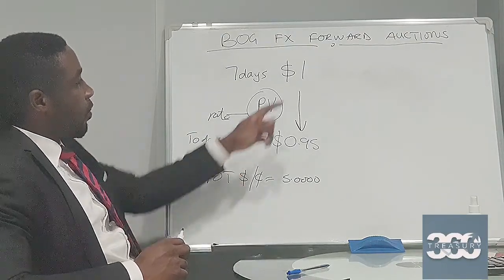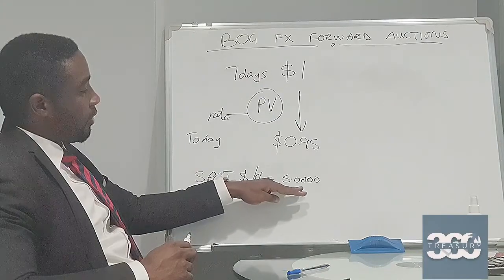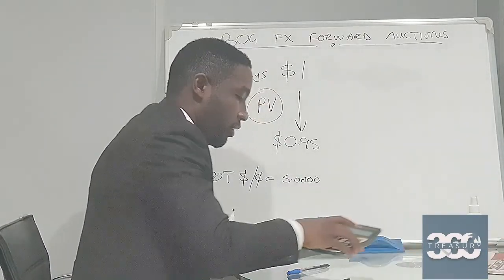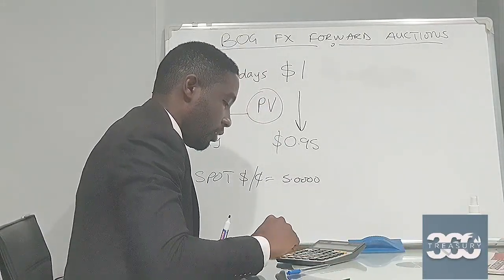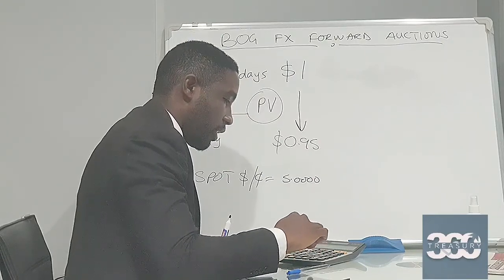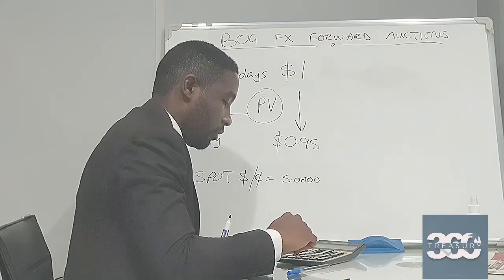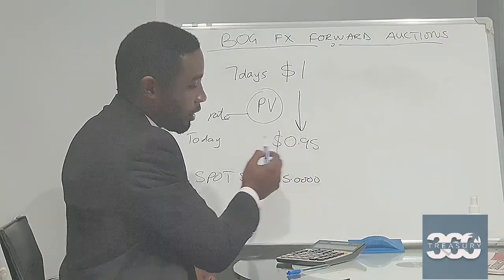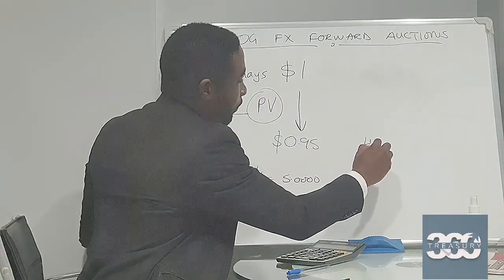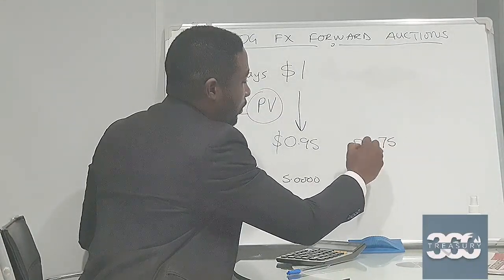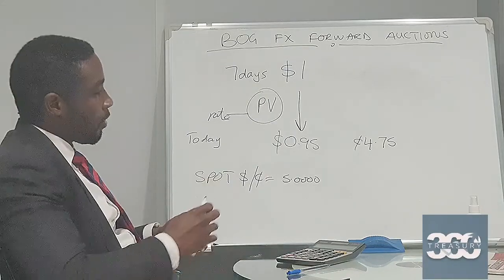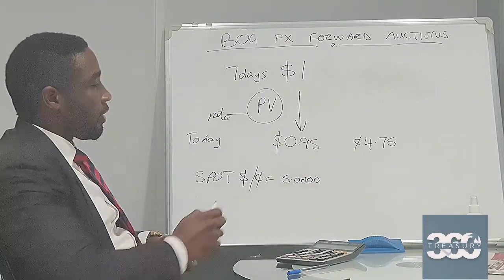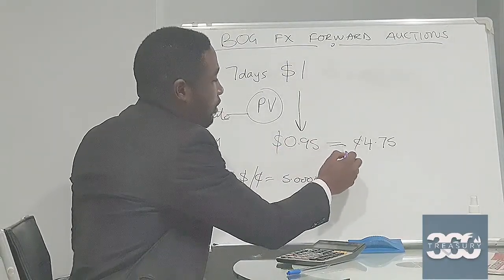In this case, we are saying that one dollar today costs five GHS. So, how much would 0.95 dollars cost? Using a simple calculator: 0.95 dollars times five GHS gives us 4.75 GHS. So to buy 0.95 dollars, I need to pay 4.75 GHS. In the spot market, one dollar goes for five GHS; if I want to buy 0.95 dollars, I need to pay 4.75. So today, this is equal to this.